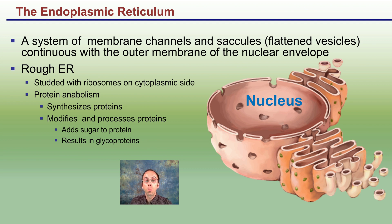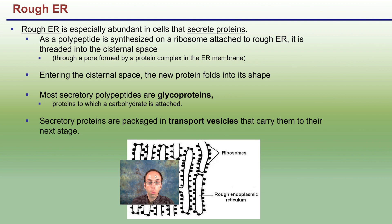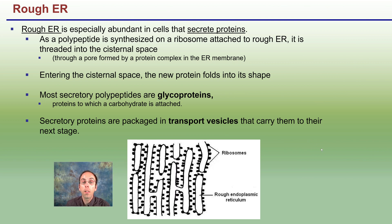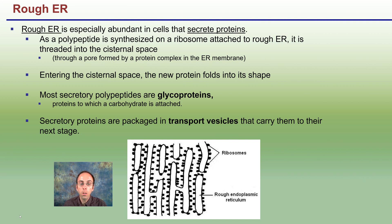The rough ER also allows for proteins to be modified and processed. Sugars can be added, resulting in glycoproteins. This rough ER, with its ribosomes, is especially abundant in cells that secrete a lot of proteins, which makes sense because it's the site of protein production. As a polypeptide is synthesized in a ribosome attached to the rough ER, it's threaded into the cisternal space. You'll notice in this picture a high degree of surface area from many folds, allowing a lot of ribosomes to be packed into a very small area.